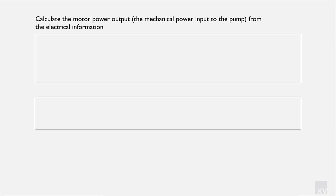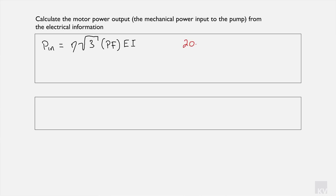Next we determine the power input to the motor. The power into the motor equals the motor efficiency multiplied by √3, multiplied by the power factor, multiplied by the electrical supply voltage of 460 volts, multiplied by the amps. Performing this calculation, the power going into the motor is 20.5 × 10³ watts. Note that P_in equals Ẇ_motor.